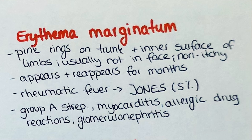The next erythematous disease is erythema marginatum, which you might have heard about from our video on rheumatic fever. This erythematous disease presents with pink rings on the trunk and inner surface of the limbs. It usually does not affect the face and is usually non-itchy. It can be seen in group A streptococcal infections, myocarditis, allergic drug reactions and glomerulonephritis. Even though it is only observed in approximately 5% of patients with rheumatic fever, it is one of the Jones criteria.